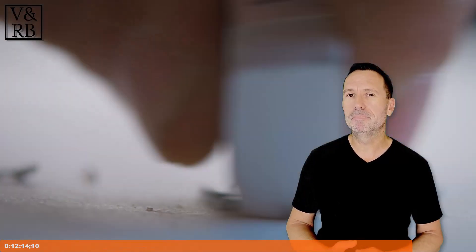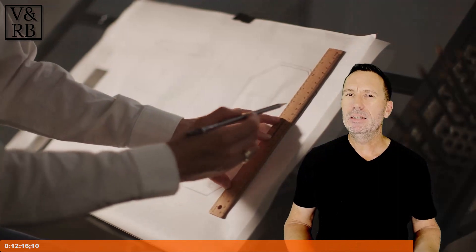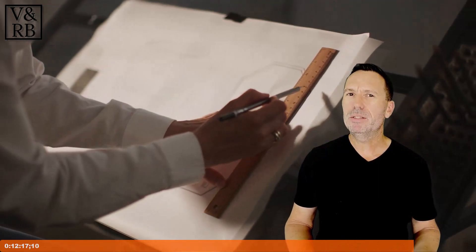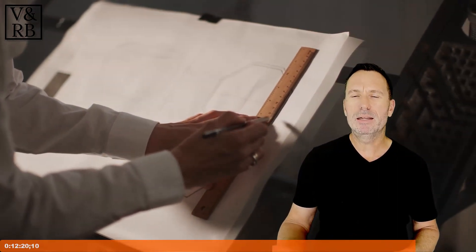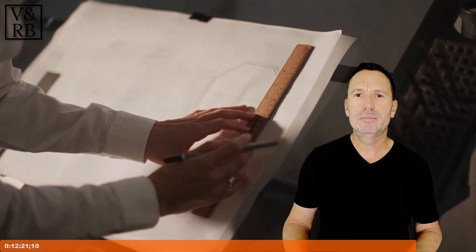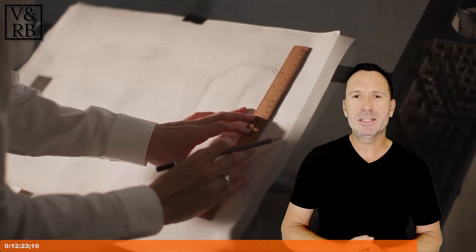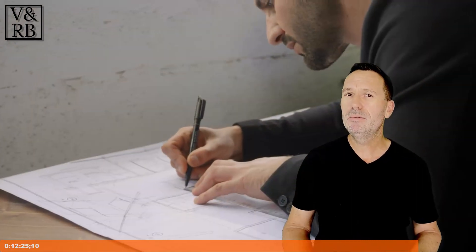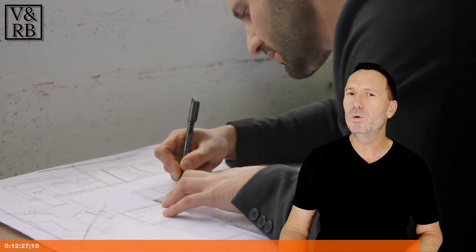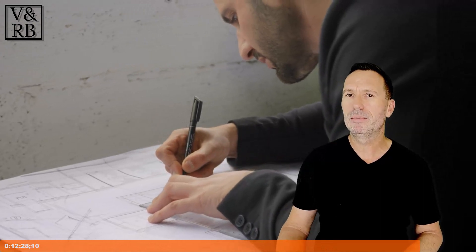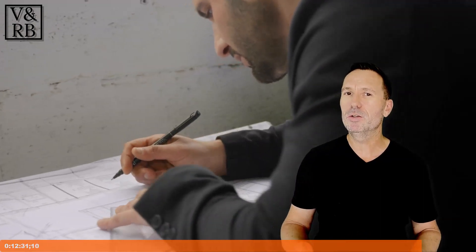In those early days there were a few steps to the design process. Step one was to design in pencil so we could erase it easily and make design changes. Step two, we would ink the final design in with rotary pens.